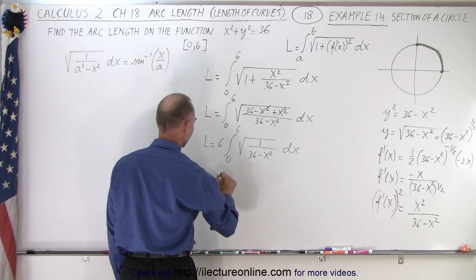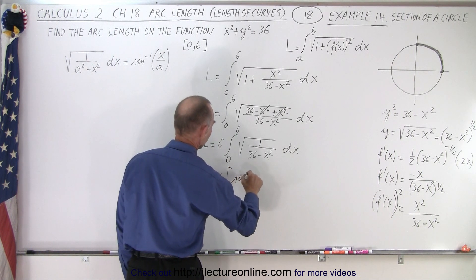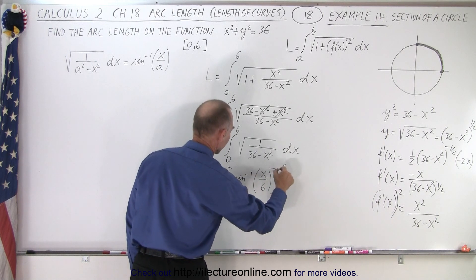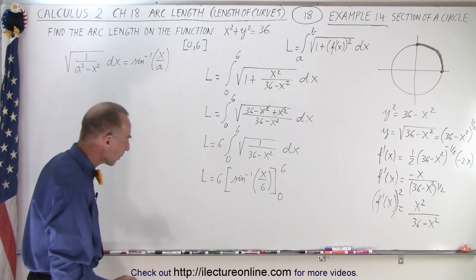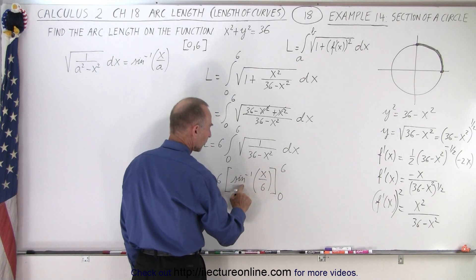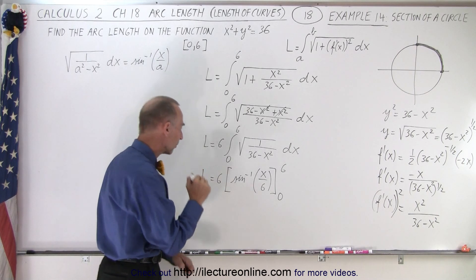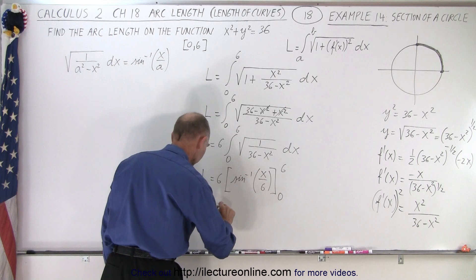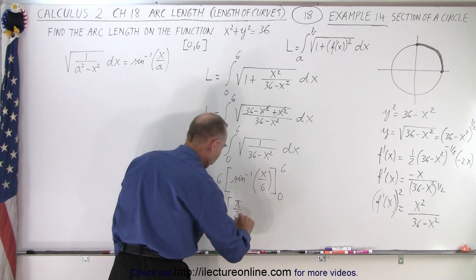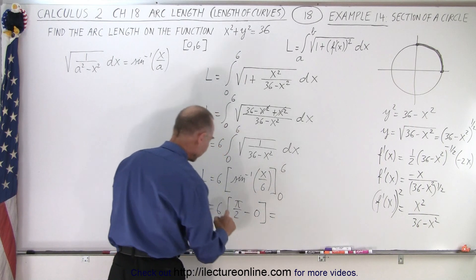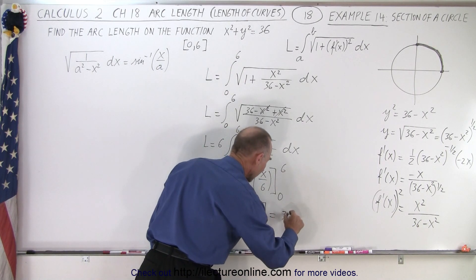The arc length equals 6 times the inverse sine of x over 6, evaluated from 0 to 6. Plugging in the upper limit of 6, we get the inverse sine of 1, which equals pi over 2, since the sine of pi over 2 is 1. Plugging in the lower limit of 0, the inverse sine of 0 is 0. So this gives us 6 times pi over 2, which equals 3 pi.